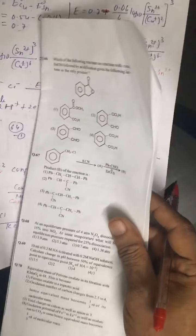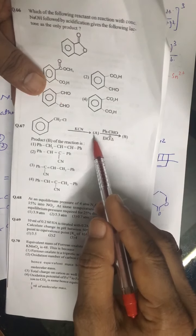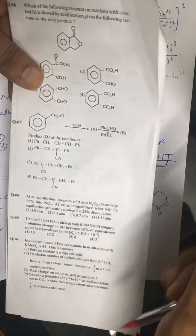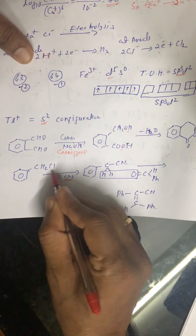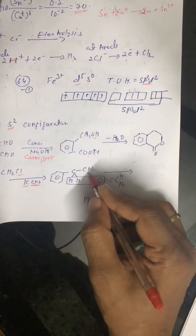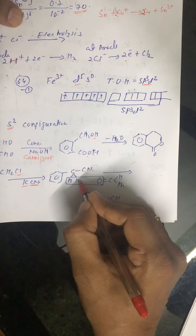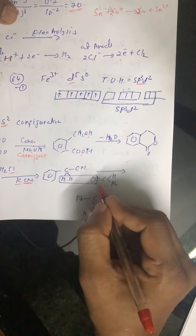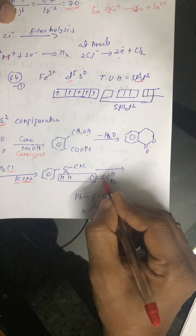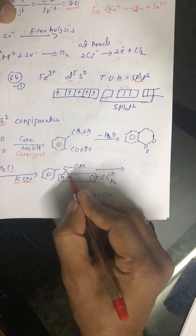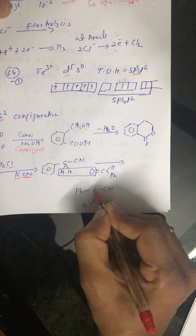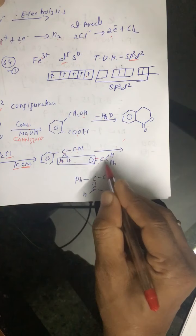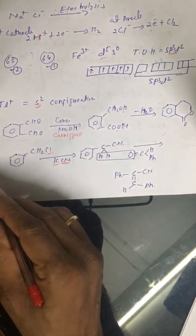Question number 67: benzyl chloride (C₆H₅CH₂Cl) is treated with KCN, then the product is treated with benzaldehyde. Reacting CH₂Cl with CN⁻ removes KCl to give C₆H₅CH₂CN. This compound has alpha hydrogens on the CH₂ adjacent to CN. Benzaldehyde has a carbonyl group, so an aldol-type condensation occurs, removing the alpha hydrogens to give C₆H₅CH=C(CN)C₆H₅ (with C=C double bond). Correct answer is the fourth option.